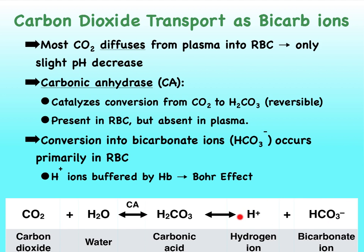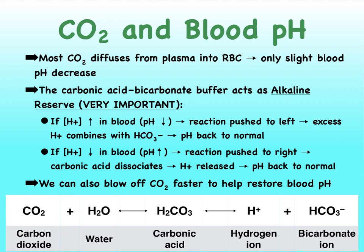These hydrogen ions can bind to our hemoglobin molecules, which creates deoxyhemoglobin — meaning oxygen will unload via the Bohr effect. This reaction functions as a buffer; it functions as what we refer to as the alkaline reserve. Various areas in our body depend on this alkaline reserve created by the carbonic acid-bicarbonate buffer.